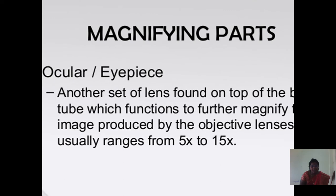Magnifying parts also include the ocular or eyepiece, which is another set of lenses found on the top of the tube. It functions to further magnify the image produced by the objective lenses and usually ranges from 5 to 15 magnification.